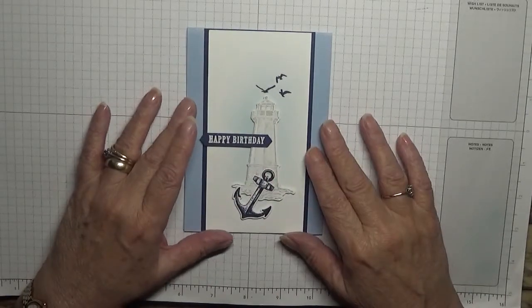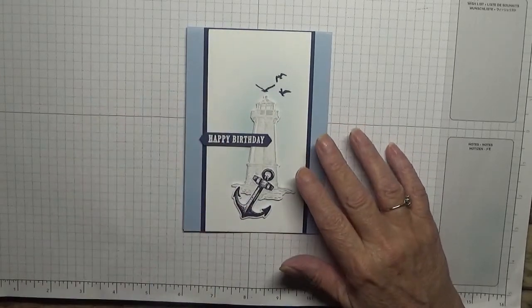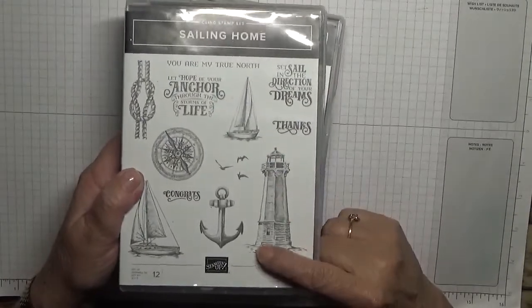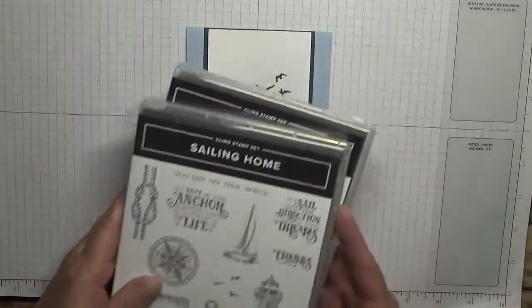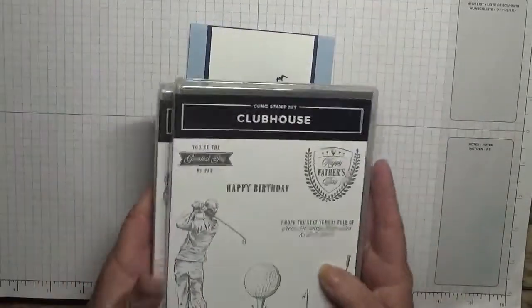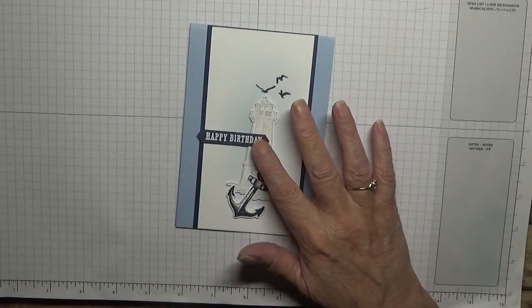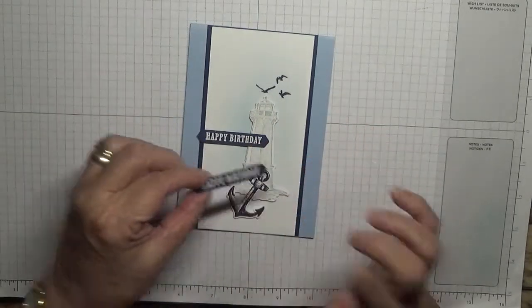She found this and asked me to make this one. I said yeah sure, as long as I could film it, which I have. To make this card I'm using Sailing Home - just using the lighthouse, the anchor, and the birds - and I'm also using Clubhouse for the happy birthday.